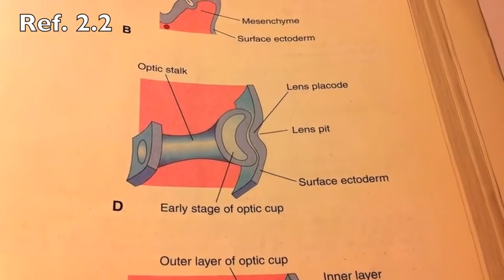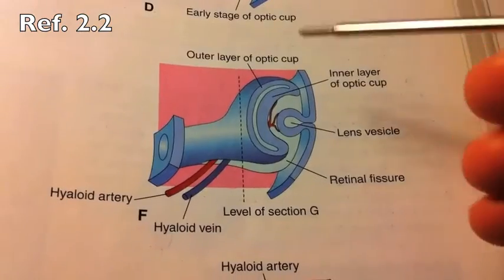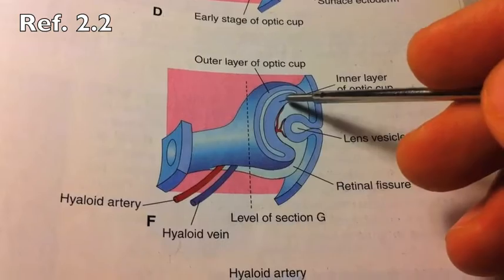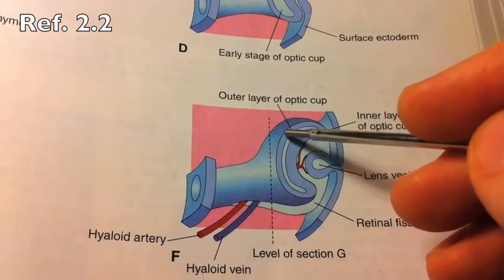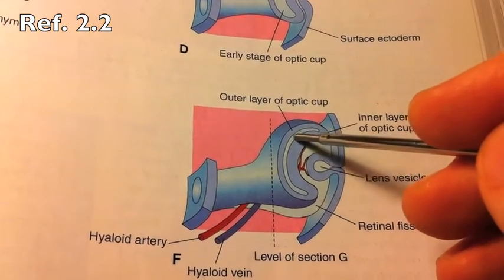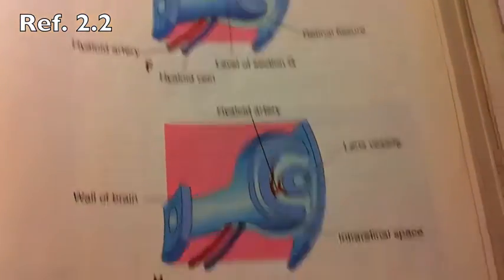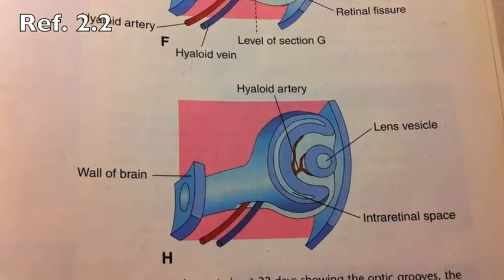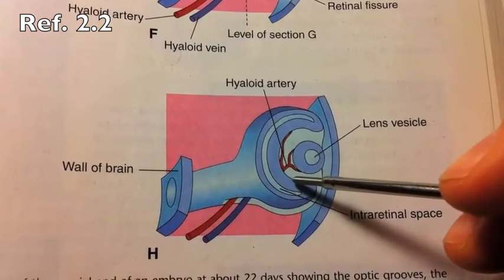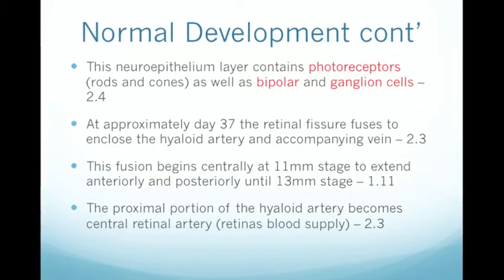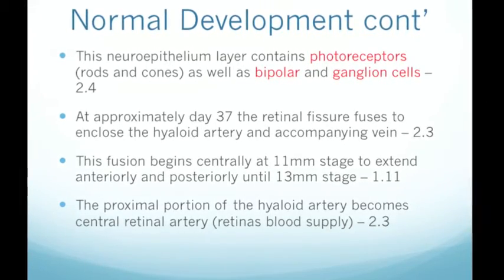Here we can see the optic cup in its early stages of development. It's split into two: an inner thicker layer known as the neural retina, and an outer thinner layer known as the retinal pigment epithelium. We can also see the intra-retinal space and the retinal fissure, which becomes particularly important in abnormal development. The lens vesicle initiates a reaction with the neural retina to make it proliferate into the neuroepithelium. This newly formed layer contains photoreceptors known as rods and cones, as well as bipolar and ganglion cells.